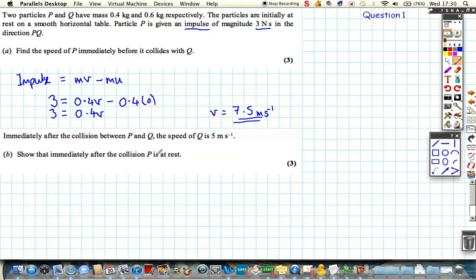If we consider the second part of the question, immediately before the collision, well they're going to collide, so they're going to bash each other. So P is now travelling at 7.5, and Q is still at rest. So let's just draw a little diagram to help us with this.